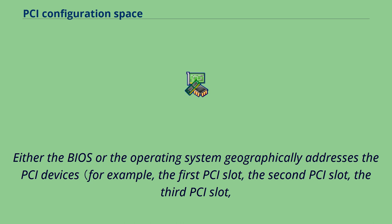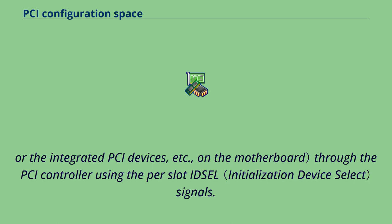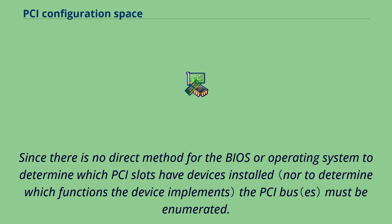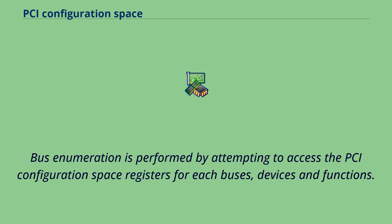The BIOS or OS geographically addresses PCI devices — for example, the first PCI slot, the second PCI slot, the third PCI slot, or integrated PCI devices on the motherboard — through the PCI controller using per-slot IDSEL signals. Since there is no direct method for the BIOS or OS to determine which PCI slots have devices installed, the PCI bus must be enumerated. Bus enumeration is performed by attempting to access the PCI configuration space registers for each bus's devices and functions.